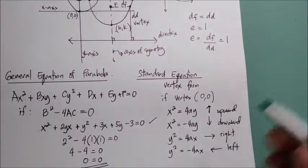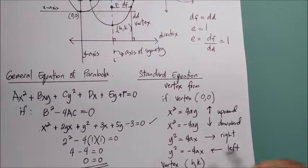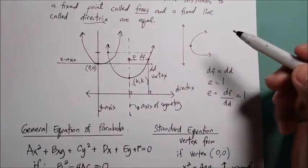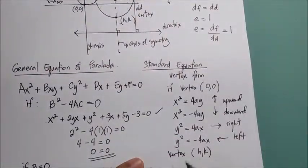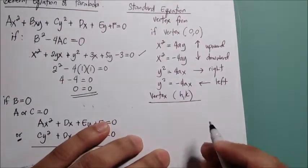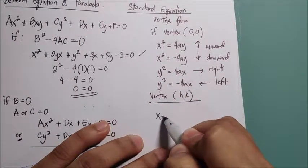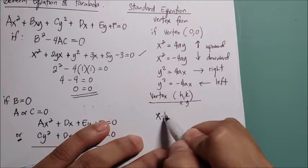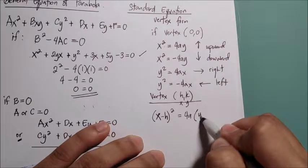If the vertex is at (h, k), the equations are adjusted accordingly. The vertex is denoted as (h, k) rather than (x, y) by convention. For a parabola opening upward: (x − h)² = 4a(y − k). For a parabola opening downward: (x − h)² = −4a(y − k).